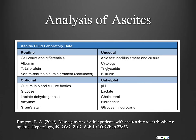Things that are routinely done but not very helpful are glucose and LDH — I usually don't order those. Gram stain is notoriously unhelpful in patients with cirrhosis but we usually send it as well. Assuming we know the patient has cirrhosis, the routine things are cell count, albumin, and total protein.